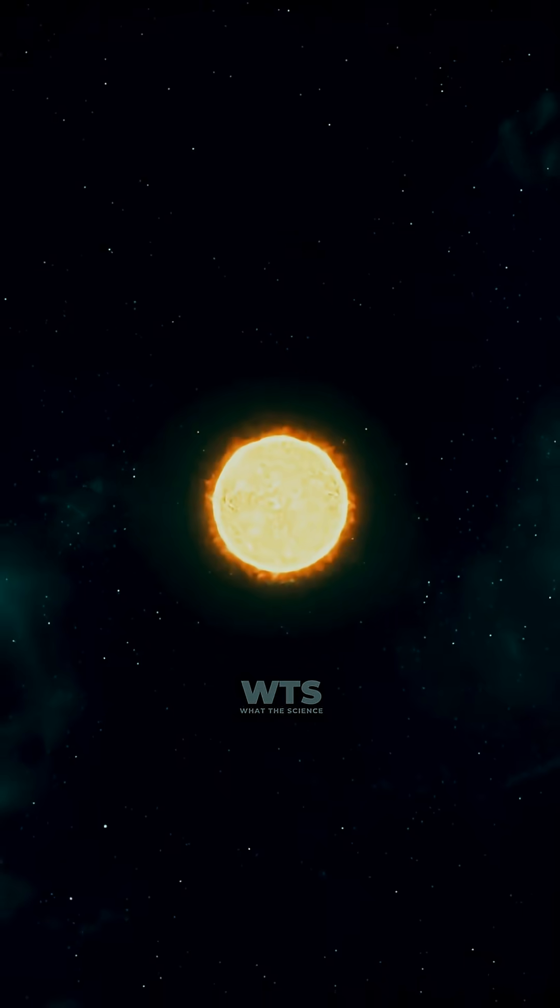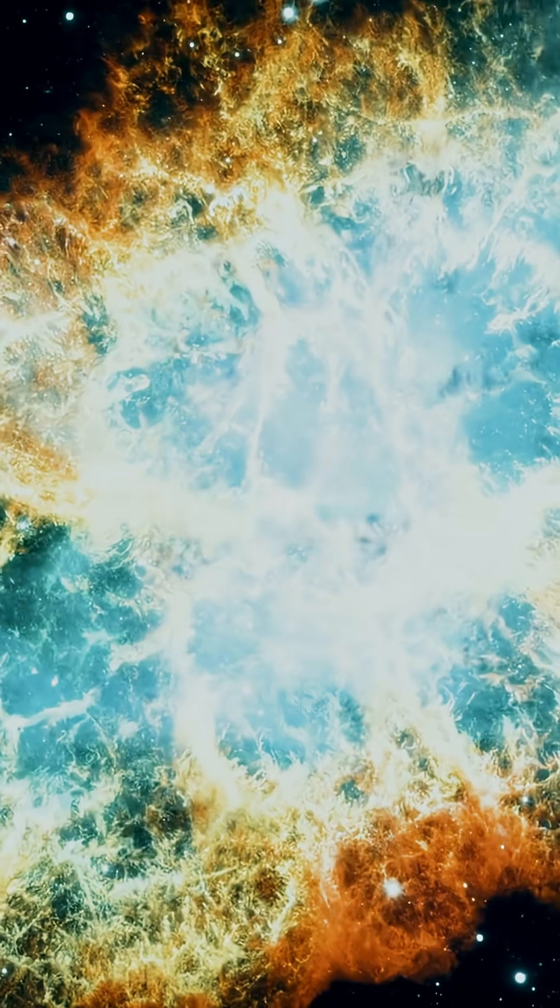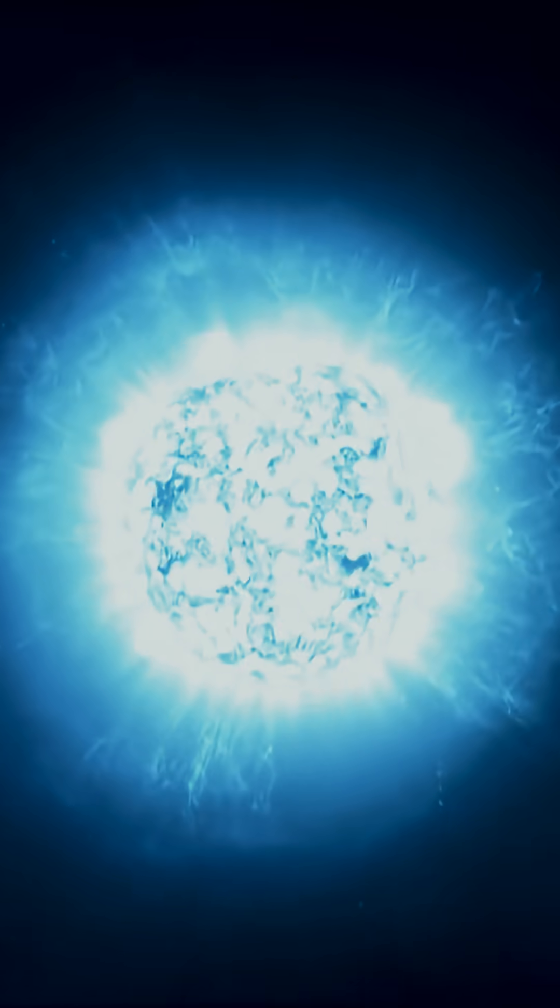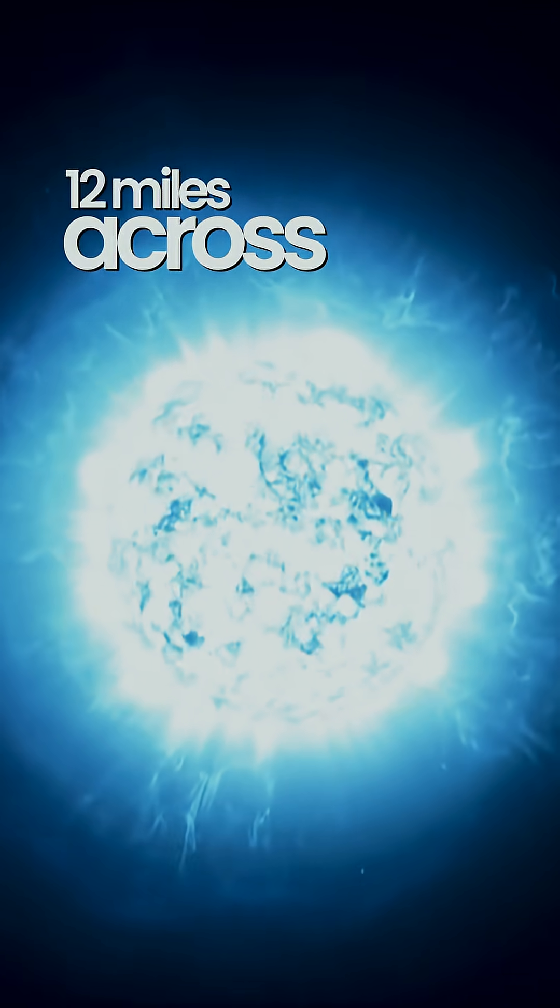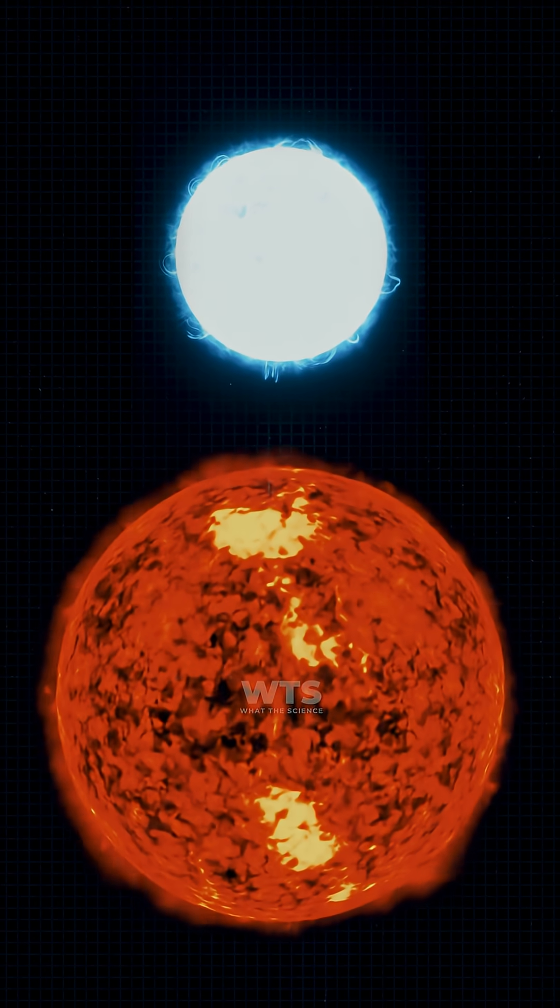Magnetars are born when massive stars explode in supernova and their cores collapse. They're incredibly small, only about 12 miles across, but they pack more mass than our entire sun into that tiny space.